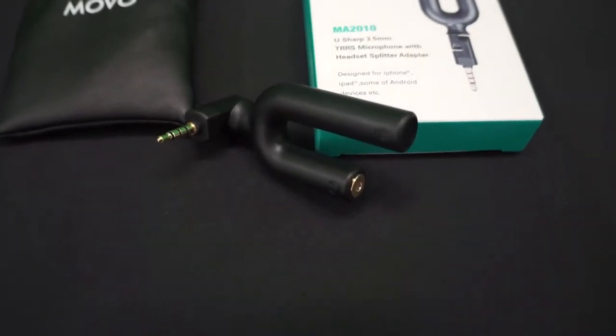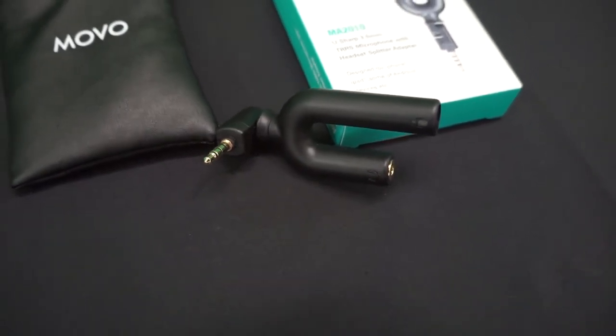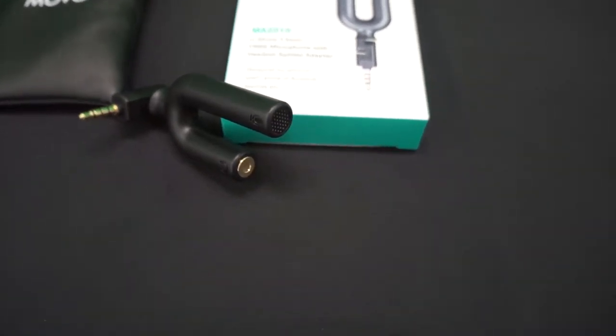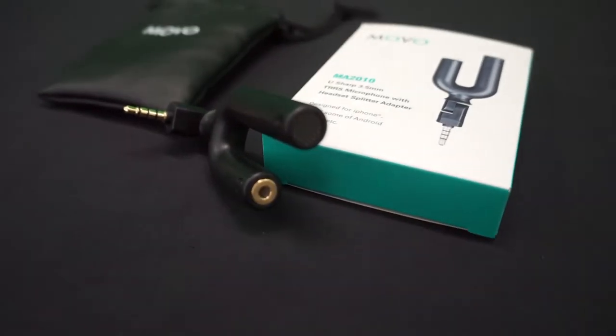This is a Movo MA2010 3.5 millimeter mic with a headphone jack. This is something that you plug into your smartphone so that you can get some directional focus on a sound source as you're recording video with your smartphone.